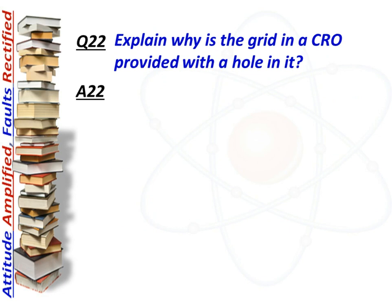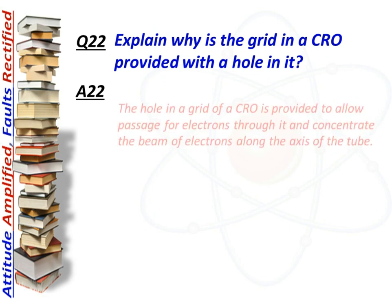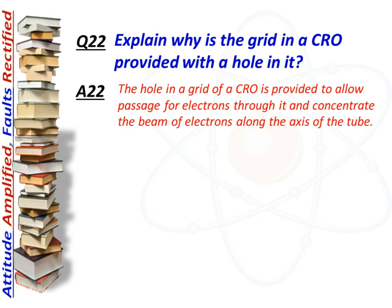Next question: why is the grid in a CRO provided with a hole in it? Answer: The hole in the grid of a CRO is provided to allow electrons to pass through it and concentrate the beam of electrons along the axis of the tube.